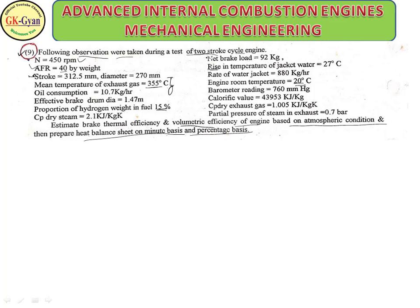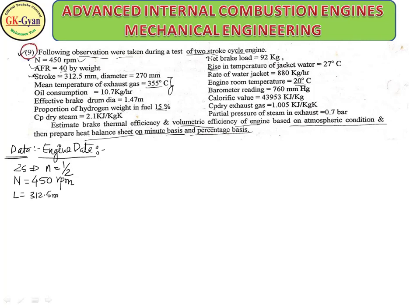We will find out the data first. It is a 2-stroke engine, so small n equals 1 (power strokes per revolution). Speed N = 450 rpm. Stroke L = 312.5 mm, which equals 0.3125 m. Diameter of cylinder = 270 mm, which equals 0.27 m. This is the engine data.